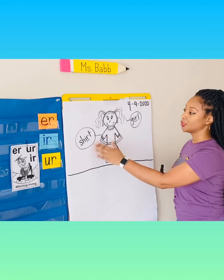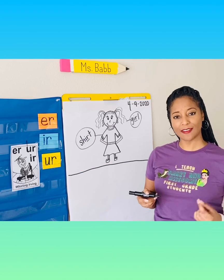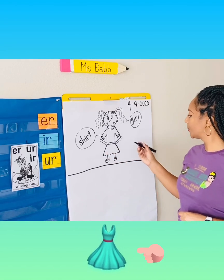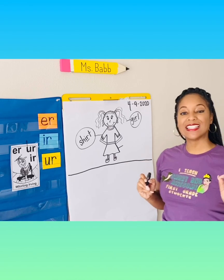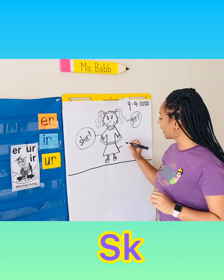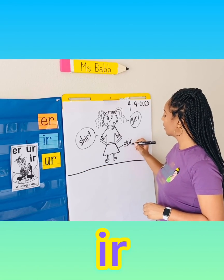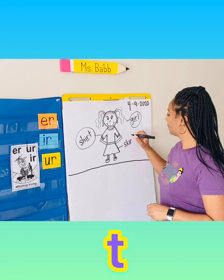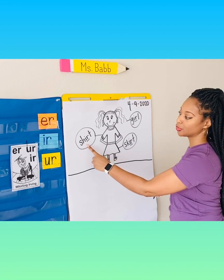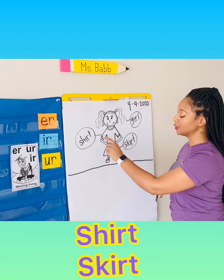So we have girl, shirt. There's one more thing in this picture that makes the ER sound with IR. Can you figure it out? Yes, down below — she's wearing a skirt. So the first sound is a blend. What two letters make the SK sound? S-K. S-K-IR-T. T. Interesting — I find that the words shirt and skirt rhyme. They sound the same at the end. Shirt, skirt.